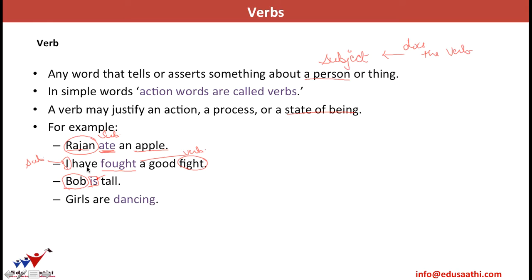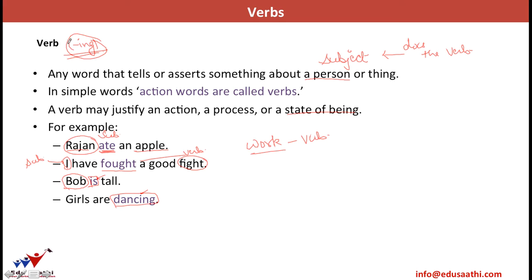Likewise, 'Girls are dancing.' What are the girls doing? They are dancing. So dancing is the verb — it is the process they are following. Dancing becomes the verb. In our discussion, whatever thing justifies the verb is the verb. A thing that may interest you is that generally, a word that ends in -ing is a verb. It may or may not be the main verb, but it is a verb. So -ing is a verb suffix. Like in this case, dancing ends in -ing and it is the main verb here.